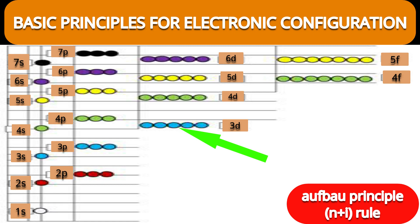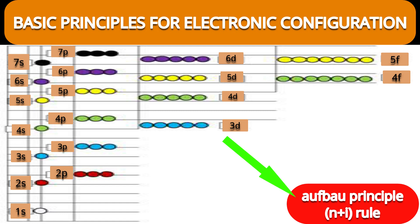But if you look at the energy in between, one subshell of the fourth shell — that is 4s — is coming. Its energy is lower than 3d. How do we reach this conclusion? I mentioned one formula. What is that formula? The n plus l rule.